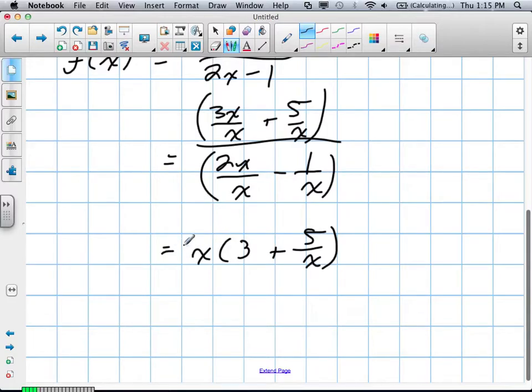We could have taken 3 out also, and we would have been left with 1. We'll still end up at the same answer, whether we take our coefficient out or not.